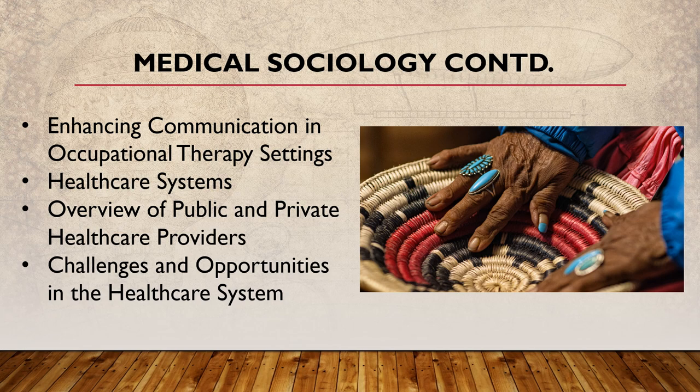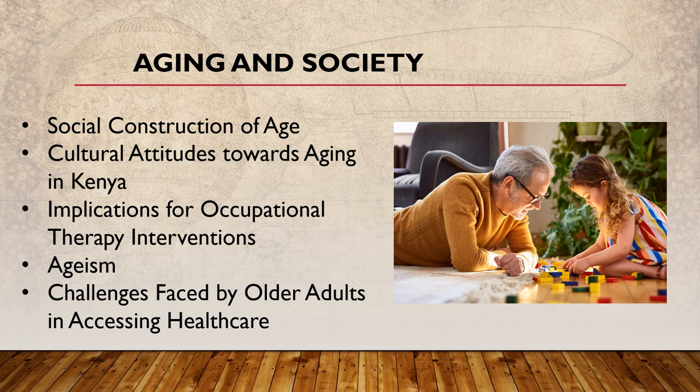I've heard about many proposals like Obamacare and Universal Healthcare being proposed in Kenya — and how does that benefit people who cannot afford it and don't have income to pay for it? When you're talking about aging in society, it's very essential to understand the social construction of age. Cultural attitudes towards aging vary widely — in some societies older adults are respected, while in others they may face discrimination and marginalization. In Japan, aging populations have prompted innovative approaches to elder care.